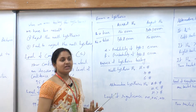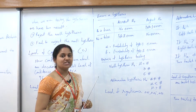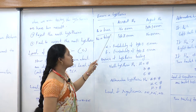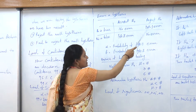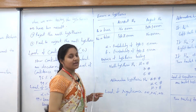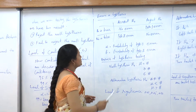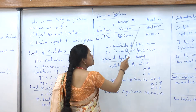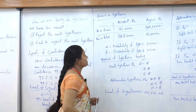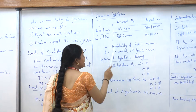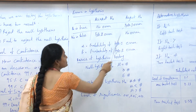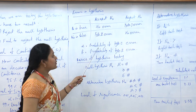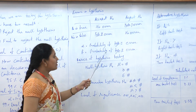Whenever we are doing hypothesis testing, there are two types of errors: Type 1 and Type 2. H0 can be either true or false, and we either accept or reject it. If H0 is true and we accept it, there is no error. If H0 is true but we reject it, that is a Type 1 error. If H0 is false and we accept it, that is a Type 2 error. If H0 is false and we reject it, there is no error. Alpha denotes the probability of a Type 1 error and beta denotes the probability of a Type 2 error.